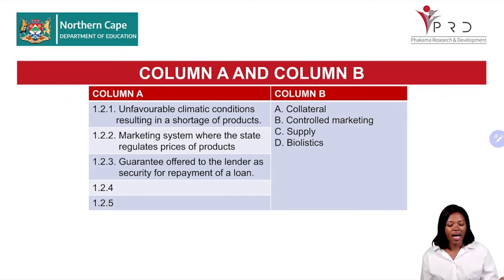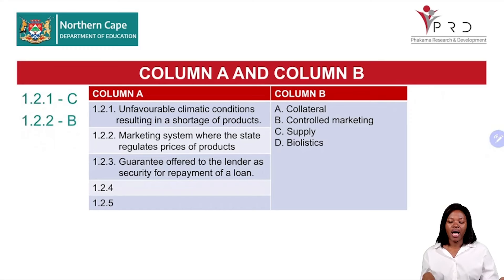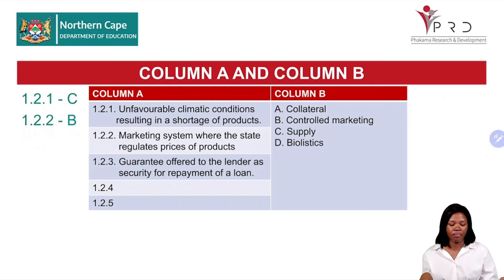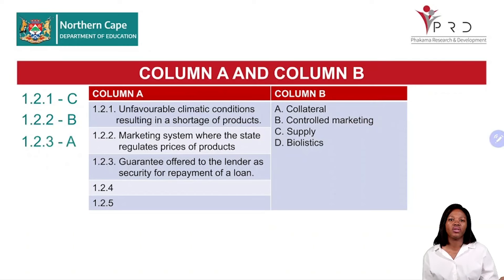Question 1.2.1: Unfavorable climatic conditions resulting in a shortage of product — the answer is supply; there will be a shortage of supply. Question 1.2.2: Marketing system where the state regulates prices — the answer is B, controlled marketing. There are different marketing systems: free marketing, controlled marketing, and cooperative marketing. Only controlled marketing is regulated by the government with stable prices. Question 1.2.3: Guarantee offered to the lender as security for loan repayment — that is collateral, because land acts as collateral.